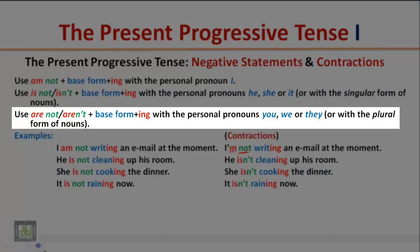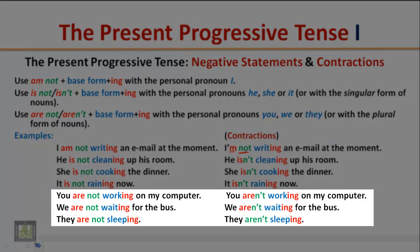Use 'are not' or 'aren't' plus the base form plus '-ing' with the personal pronouns 'you,' 'we,' or 'they,' or with the plural form of nouns. Examples: 'You are not working on my computer.' / 'You aren't working on my computer.' 'We are not waiting for the bus.' / 'We aren't waiting for the bus.' 'They are not sleeping.' / 'They aren't sleeping.'